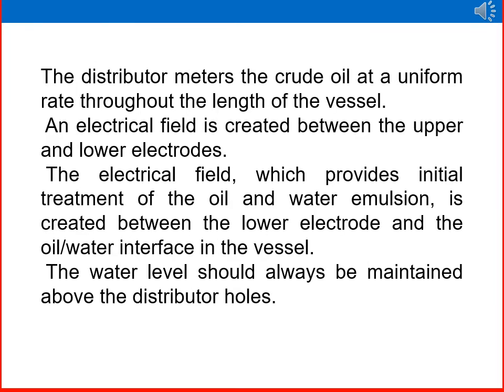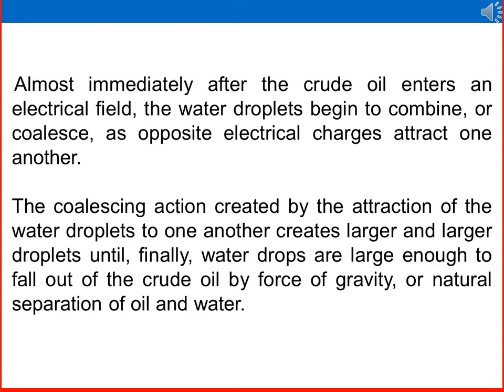The distributor meters the crude oil at a uniform rate throughout the length of the vessel. An electrical field is created between the upper and lower electrodes. The electrical field, which provides initial treatment of the oil and water emulsion, is created between the lower electrode and the oil-water interface in the vessel. The water level should always be maintained above the distributor holes. Almost immediately after the crude oil enters the electrical field, the water droplets begin to combine or coalesce, as opposite electrical charges attract one another, creating larger and larger droplets until they are large enough to fall out of the crude oil by the force of gravity.